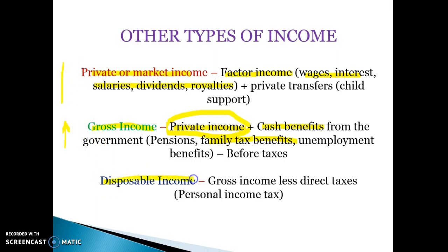Then we have disposable income. Disposable income is your gross income — factor income plus private transfers plus any cash benefits from the government — minus any direct taxes such as income tax. Disposable income is less than gross income because it is gross income minus direct taxes paid. It is more equitable than gross income because rich people pay more tax under our progressive tax system, so high income earners pay the most tax.